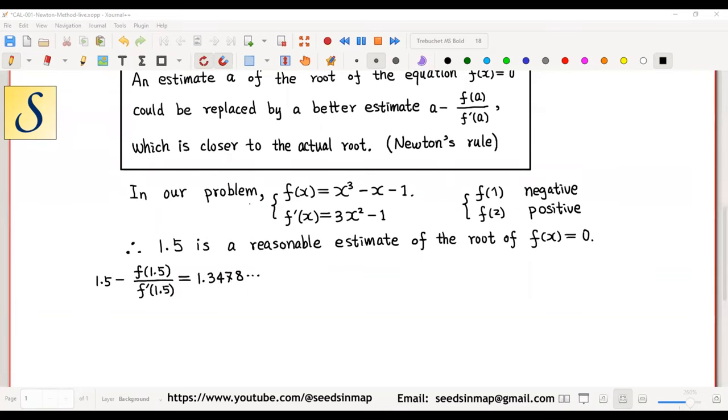By Newton's rule, the estimate 1.5 could be replaced by a better estimate, this one, which equals 1.3478 and so on.